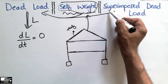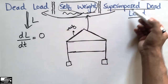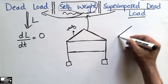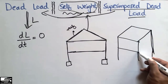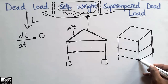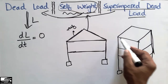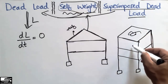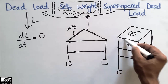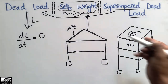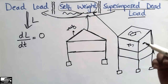Now, what are the superimposed dead loads? Superimposed dead load can be defined as the loads which are placed after the construction of any building. For example, consider a multi-story RCC frame structure with different floors. You can see columns, beams, and footings provided for the building. The slabs, beams, columns, and footings — their weight is the self weight of the structure.